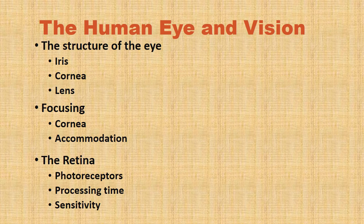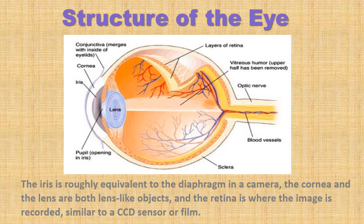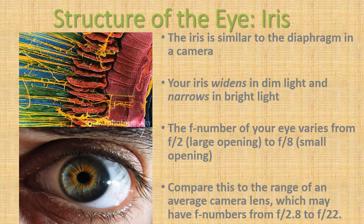This video covers the human eye and vision. The iris is roughly equivalent to the diaphragm in a camera, the cornea and the lens are both lens-like objects, and the retina is where the image is recorded, similar to a CCD sensor or film.